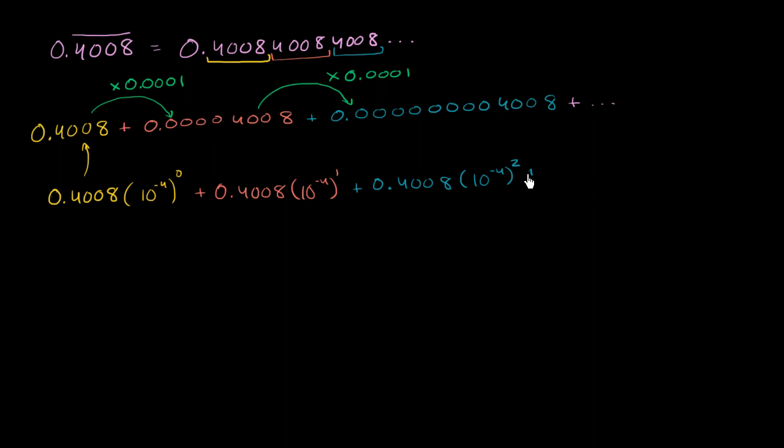So in this form, it looks a little bit clearer like a geometric series, an infinite geometric series. And if we wanted to write that out with sigma notation, we could write this as the sum from k equals 0 to infinity of 0.4008 times our common ratio, 10 to the negative fourth to the k-th power.